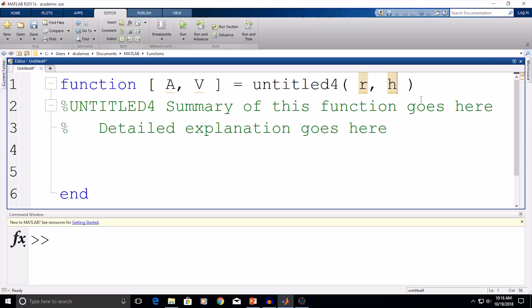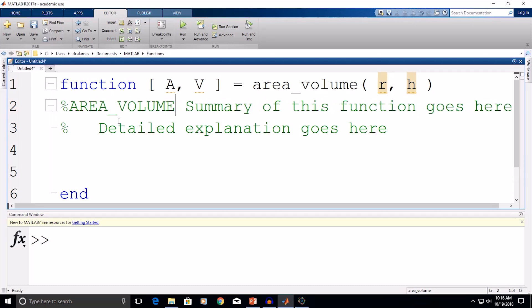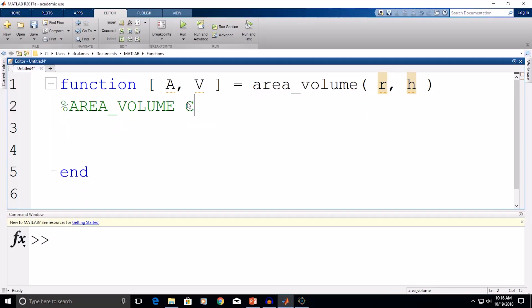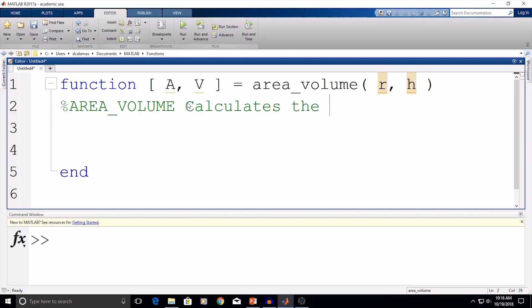Next, I'm going to change the function name from the default value in the template, and I'm going to call this function area underscore volume. Now, I'm going to move on to the comments section. So, we have the function name, area underscore volume, and then a summary of the function, which is going to be, calculates the area and volume of a cylinder.